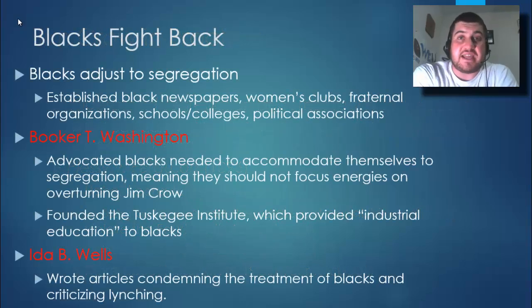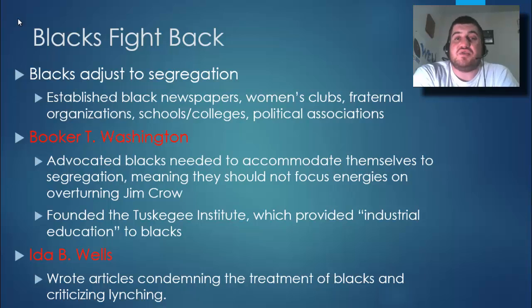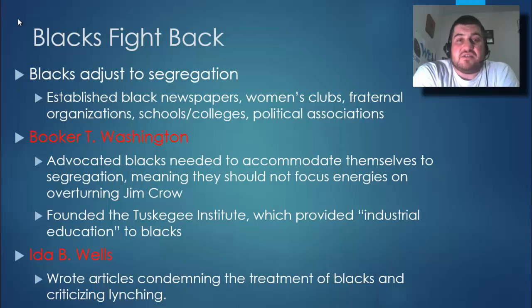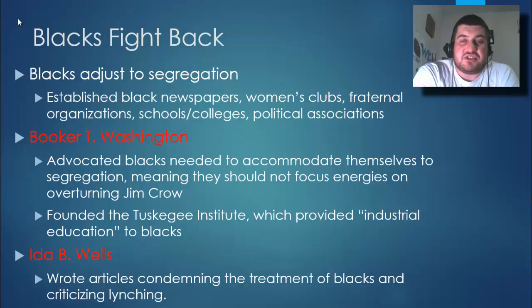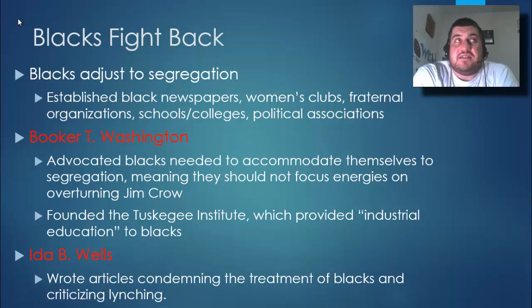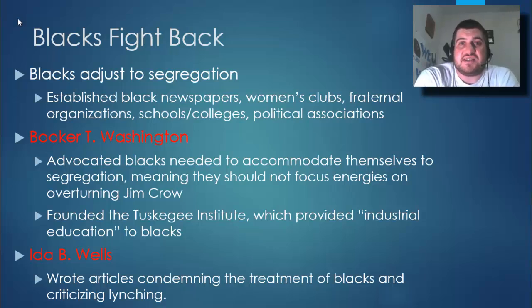How did blacks fight back against segregation? They began to adjust to it by establishing all-black newspapers, schools and colleges, fraternal organizations for men, women's clubs, and black political associations. There were two outspoken leaders. Booker T. Washington advocated that whites were never going to accept them, so blacks should accommodate themselves to segregation and get a vocational or industrial education. Washington founded the Tuskegee Institute, where blacks could go and learn a trade — a skill in order to make a living.